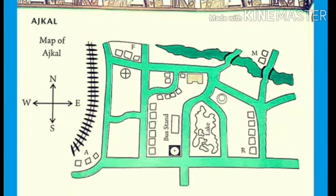Hello children, this is English workbook of class 3, page number 88 — Map and Symbols. There is a map on this page, and some symbols are given. You have to identify the directions with the help of these symbols.